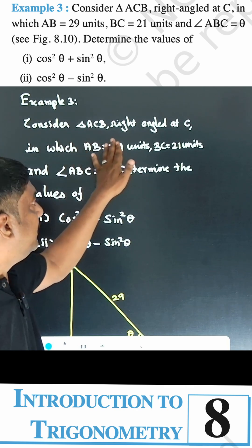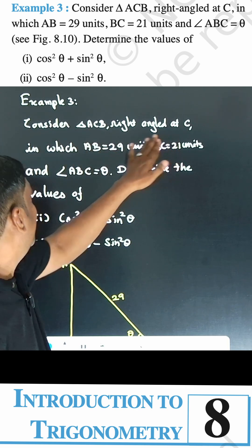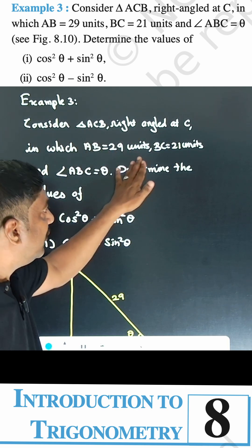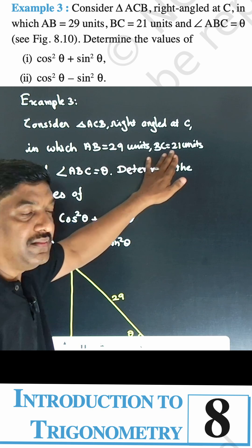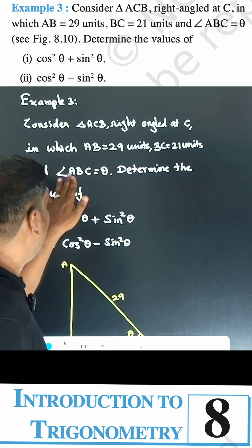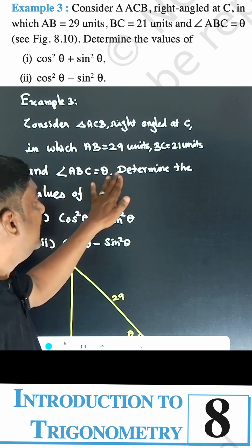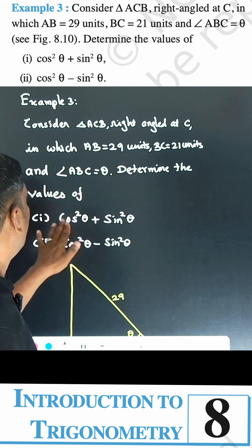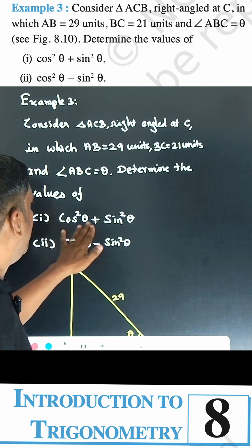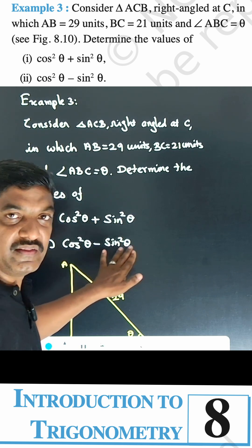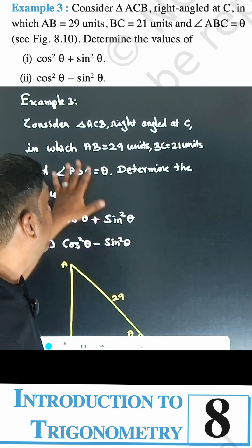Consider triangle ACB right-angled at C, in which AB is equal to 29 units and BC is equal to 21 units, and the angle ABC is equal to theta. Determine the values of: first, cos²theta plus sin²theta; second, cos²theta minus sin²theta.